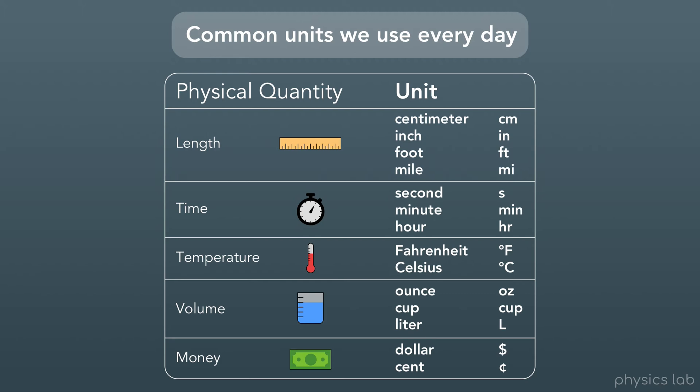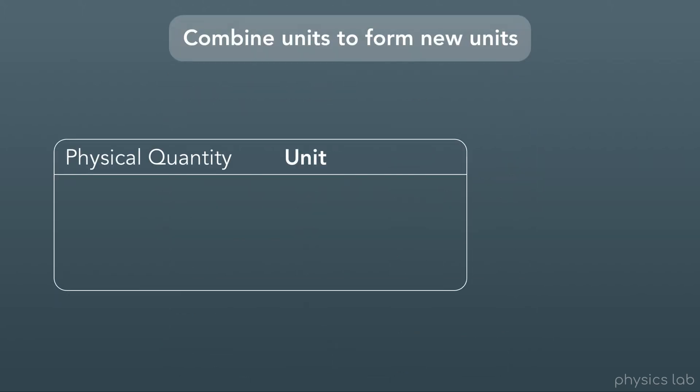And notice that almost every unit we use will also have an abbreviation as a shorter way to write that unit. We can also combine units to form new units. Like when we measure speed in miles per hour or kilometers per hour, we're combining a unit of distance and time to make a unit for speed.